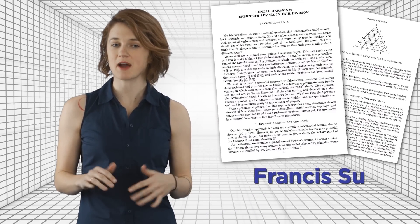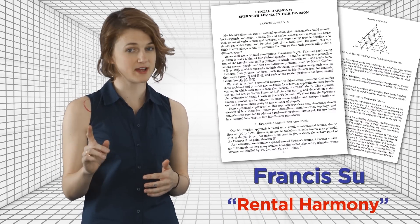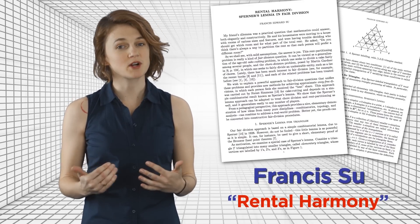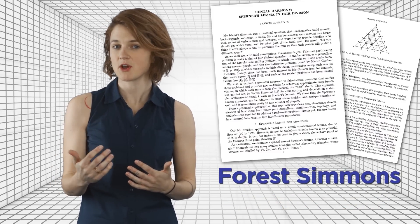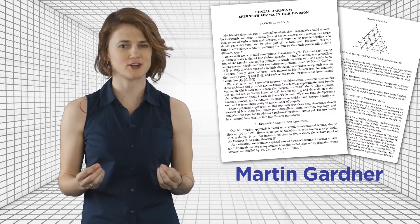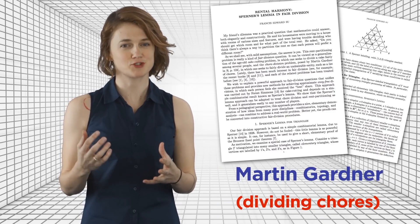Francis Su outlined this use — fairly dividing rent — in a 1999 paper, but his work was building on Forrest Simmons, who developed the method to fairly divide a cake, and Martin Gardner, who used it to divide up a list of chores. We've included links to all those papers and to a website where you and your roommates can actually implement this method to fairly divide your rent. What's something you wish you could fairly divide? Maybe Sperner's Lemma could help.